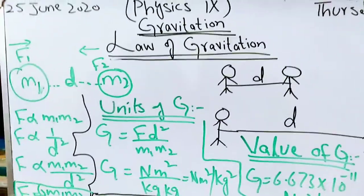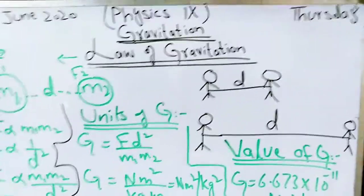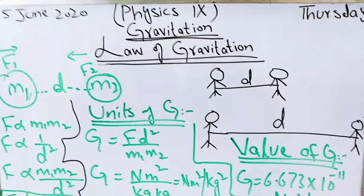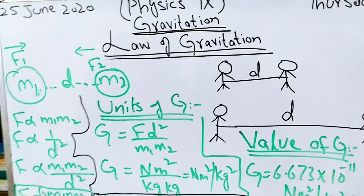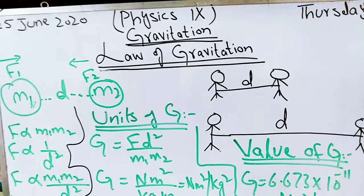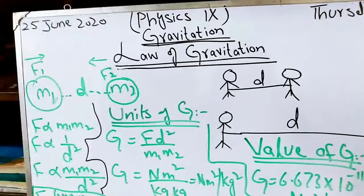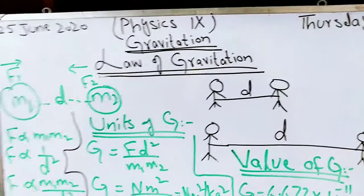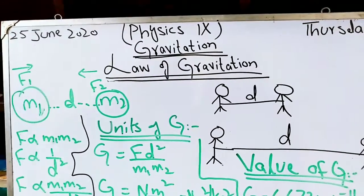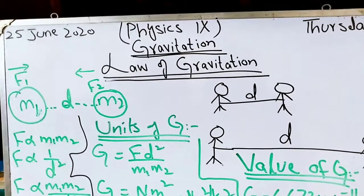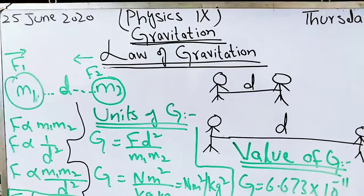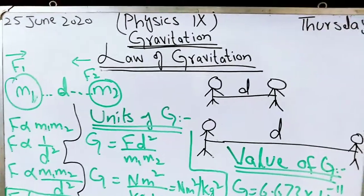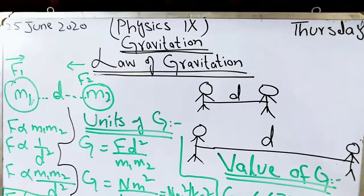Today we are going to first explore the law of gravitation. According to Sir Isaac Newton's law of gravitation, it was the same force that is responsible for keeping the moon in its orbit and for the apple falling down due to its weight. Both were similar forces, and in the universe every body attracts every other body — it has a force of attraction towards other bodies.